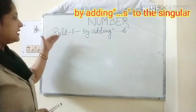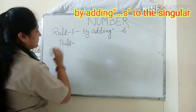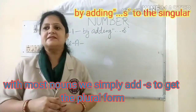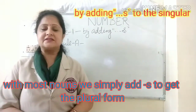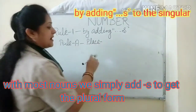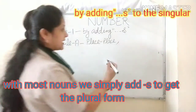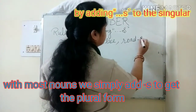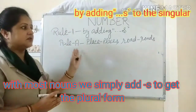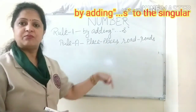This rule is divided into two sub-rules. Rule A: Most nouns — we simply add 's' to convert them into plurals. For example, place becomes places. In the same way, road can be converted into plural by simply adding 's': roads. This is Rule A — by adding simply 's', we convert singular nouns into plurals.